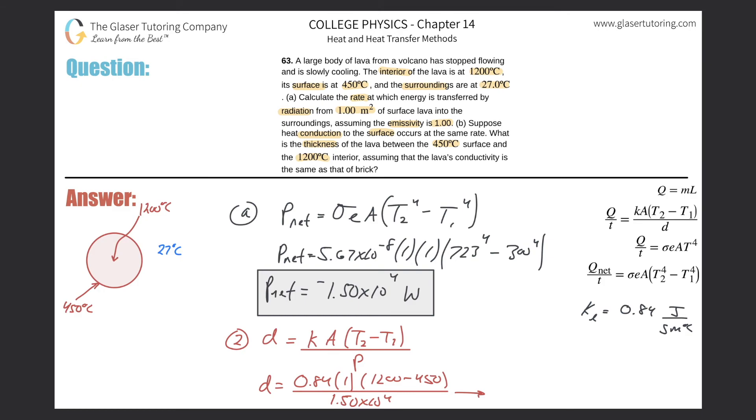So that should now be 0.84 multiplied by 1200 minus 450, all then divided by that answer that we had before. And here we go—the thickness is going to be about 0.0419 meters.